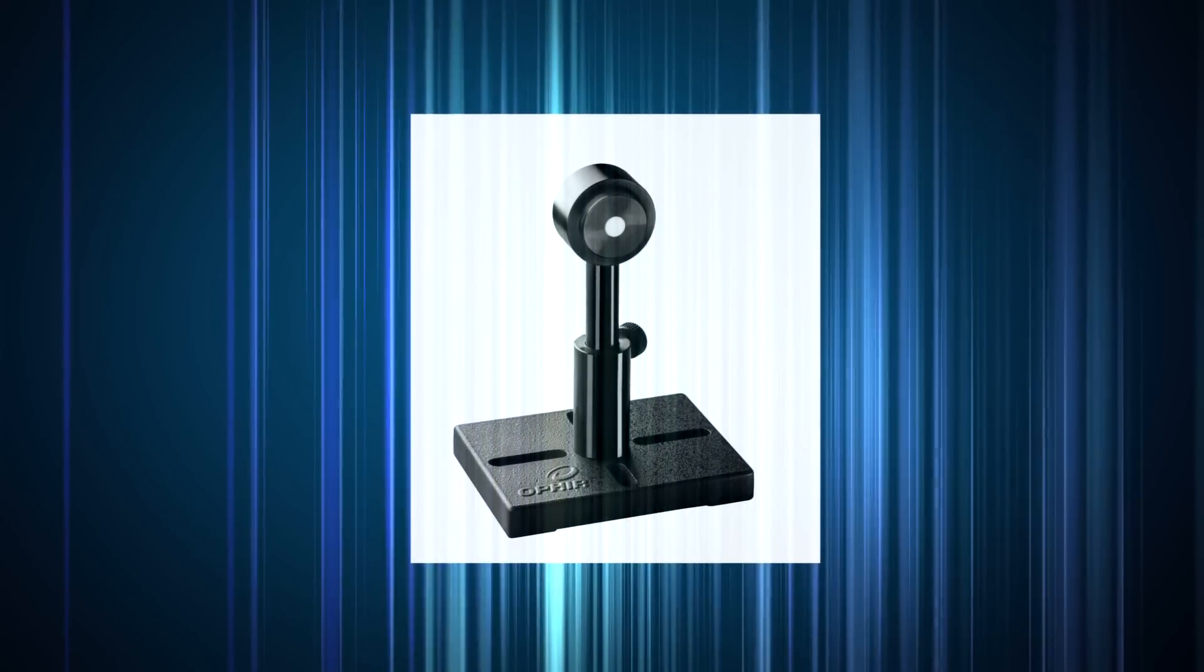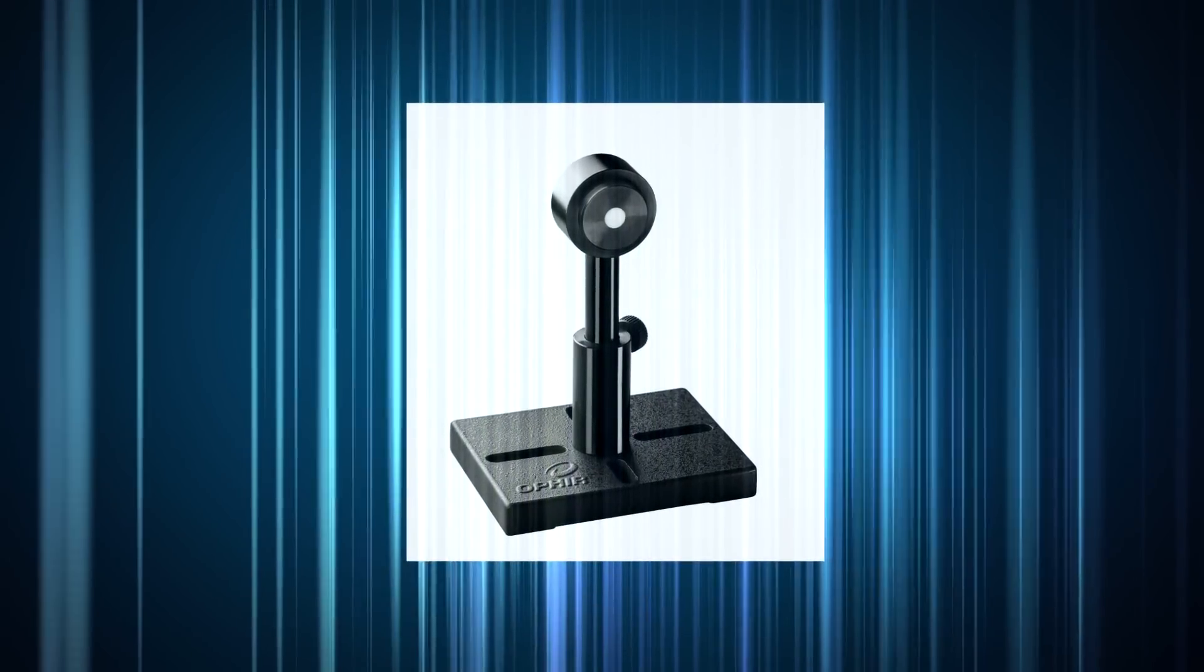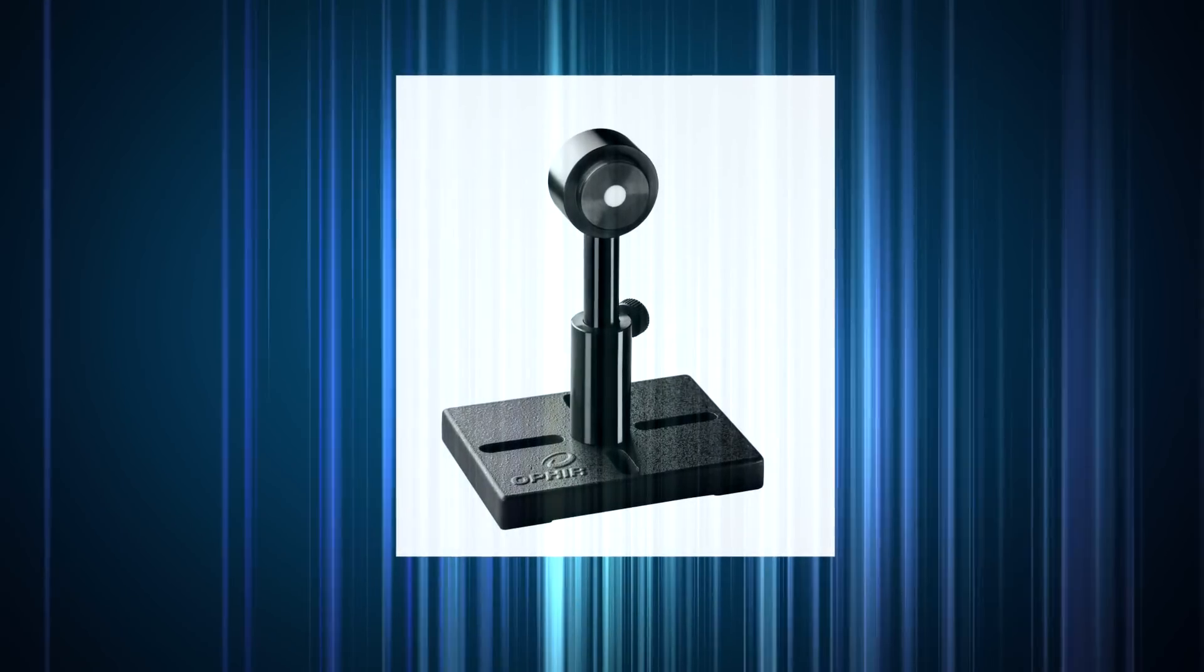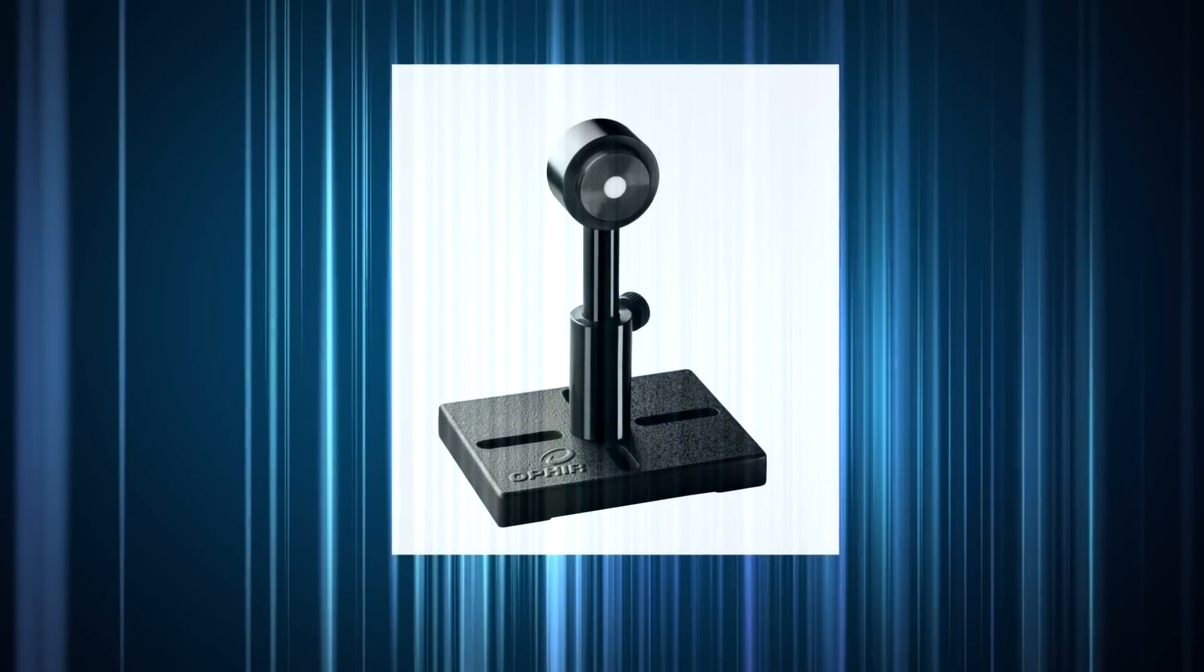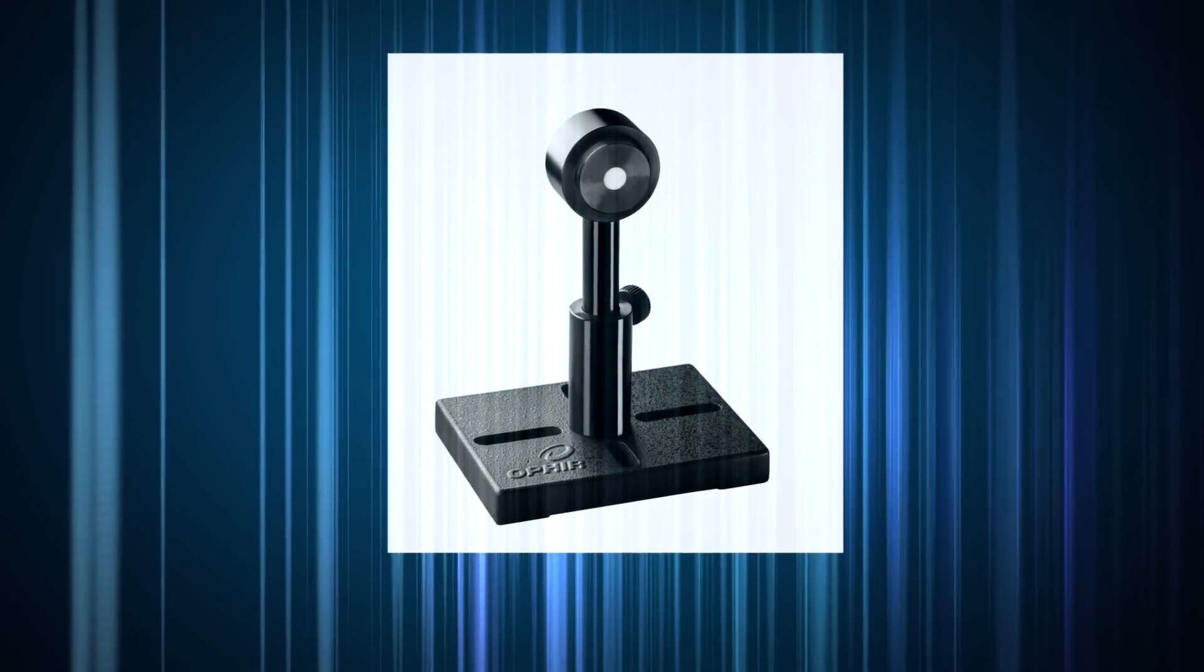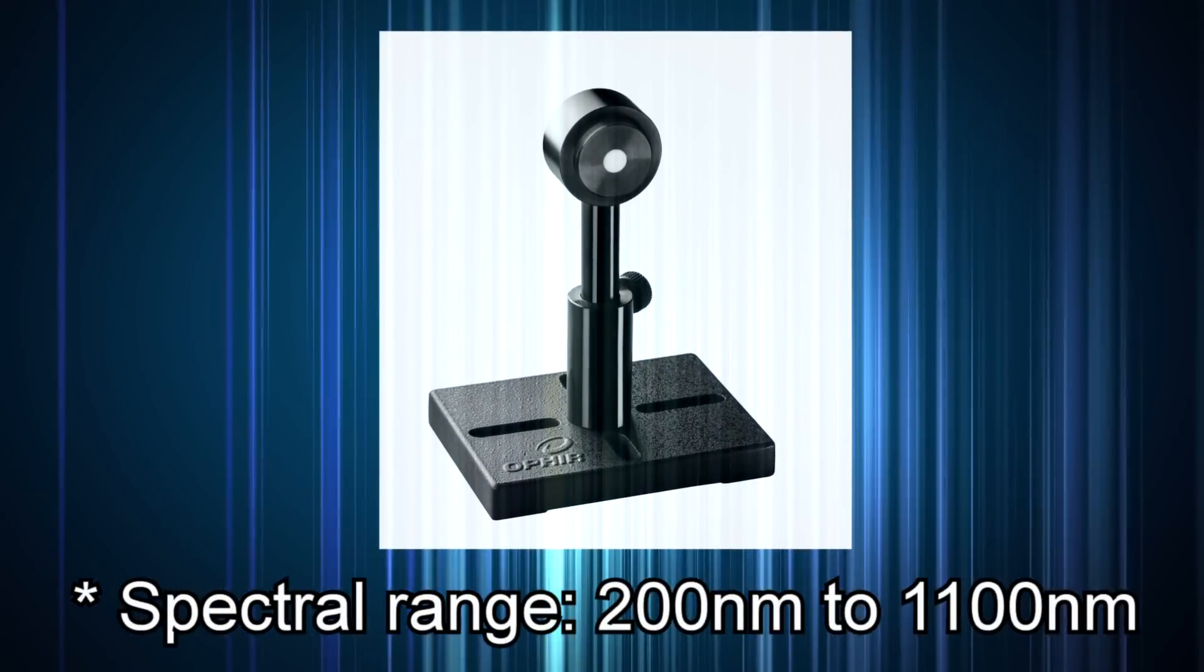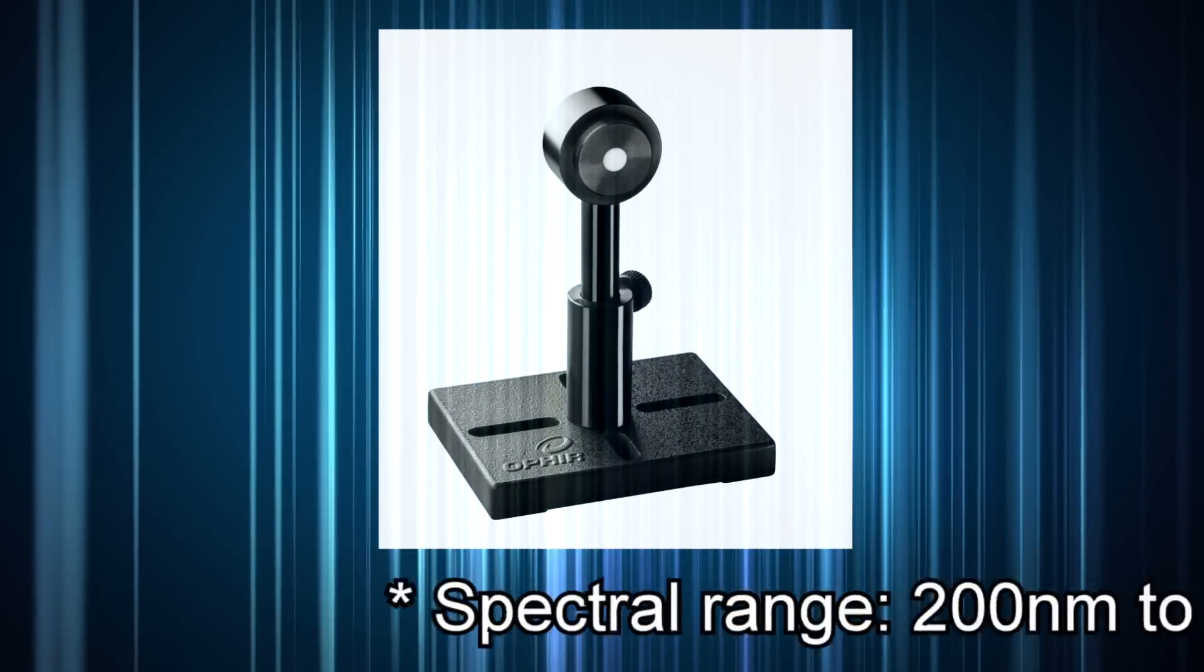The Ophir PD300RM is a highly accurate, low-cost instrument designed for meeting these needs. It's based on a photodiode sensor using a UV-enhanced silicon photodetector, so it covers a wide spectral range from 200 nanometers to 1100 nanometers. It's calibrated over this entire spectral range, not just one wavelength.